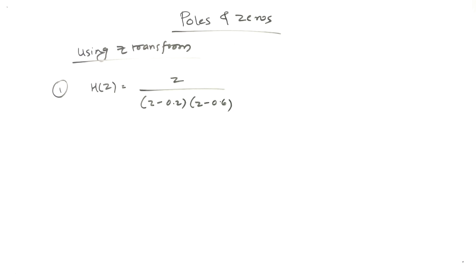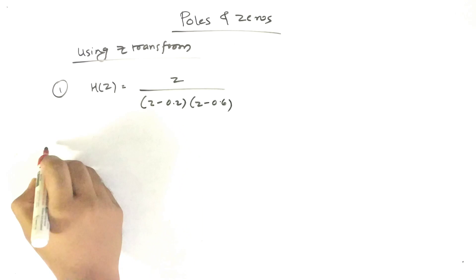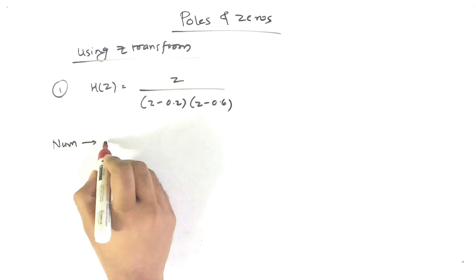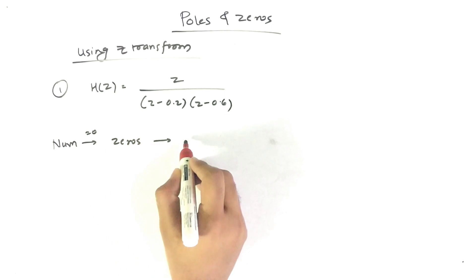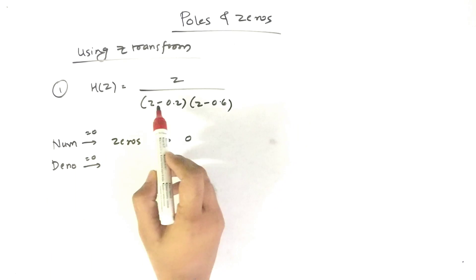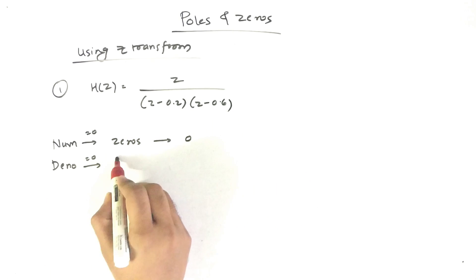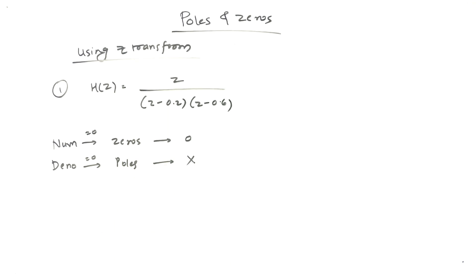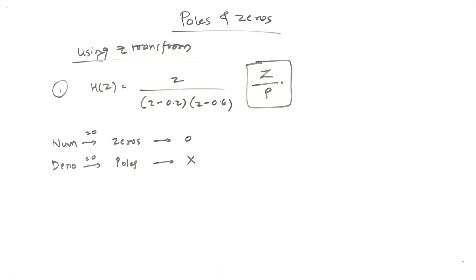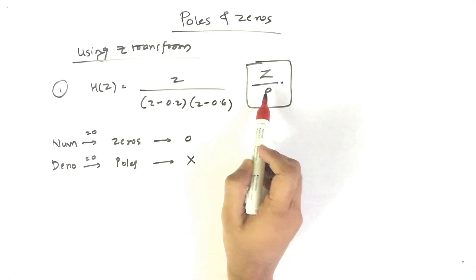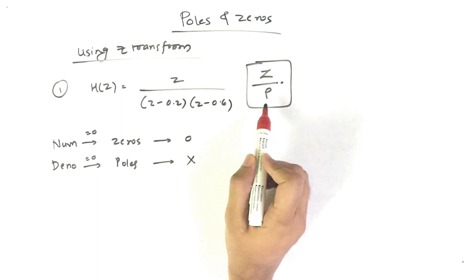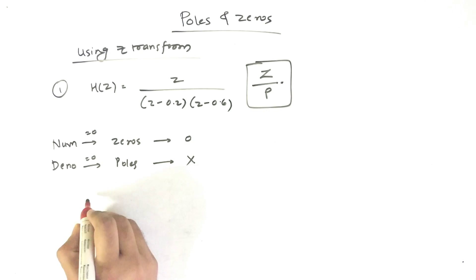Now we have to plot Poles and Zeros. First we have to find Poles. Here is the trick: if we put the numerator equal to 0, we get Zeros, represented as 'O'. If we put the denominator equal to 0, we get Poles, represented as 'X'. The trick to remember this is 'ZIP' — numerator equated to 0 gives Zeros, denominator equated to 0 gives Poles.